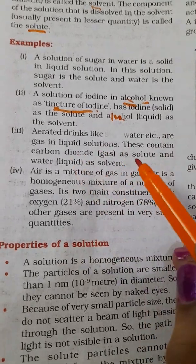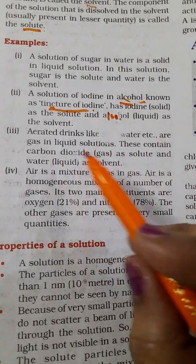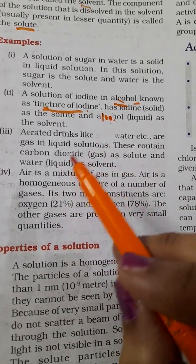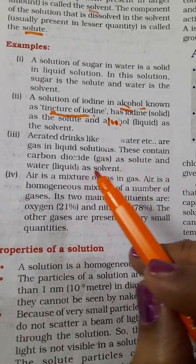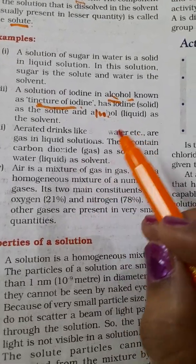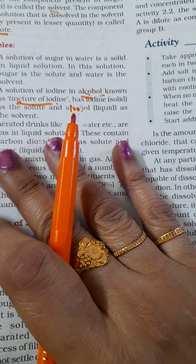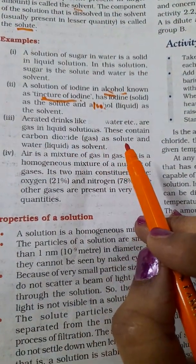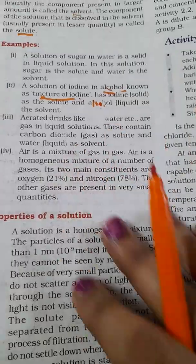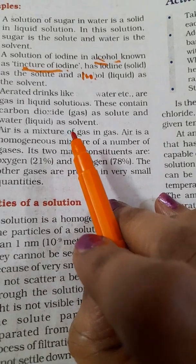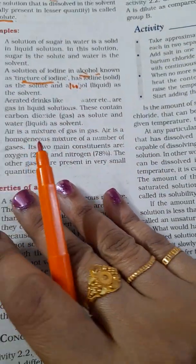Aerated drinks are gas in liquid solutions which contain carbon dioxide gas as solute and water as solvent. If you dissolve some carbon dioxide in water, that is aerated drink, normally soda water. These are called gas in liquid where gas is the solute and water is the solvent.